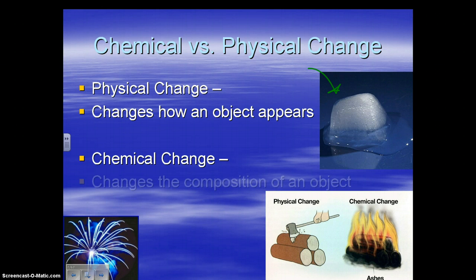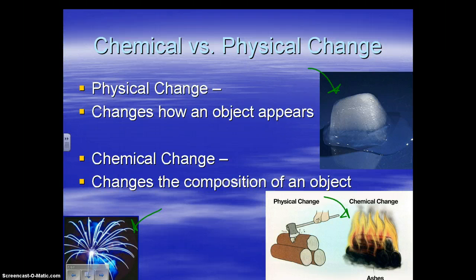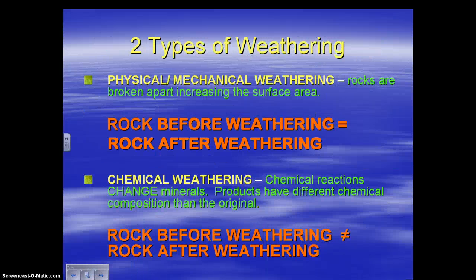A chemical change — like the examples of fireworks and burning, which is an oxidation reaction — is where the composition of the object is changing, where it actually starts as one thing and at the end is something else. This is important because the two types of weathering are physical and chemical weathering, relating to those physical and chemical changes.